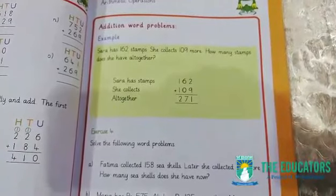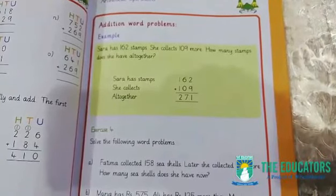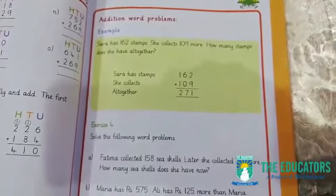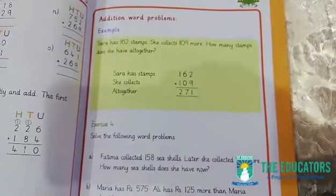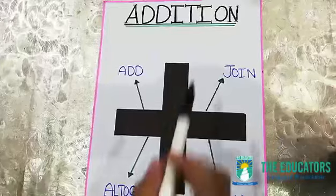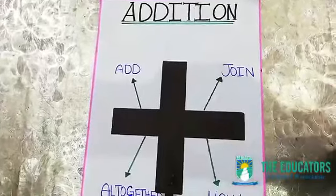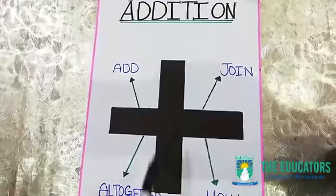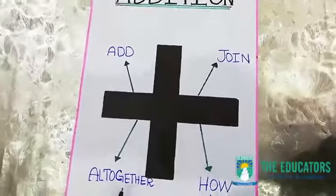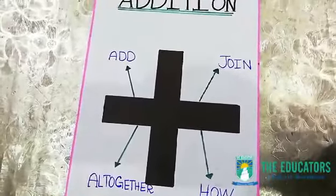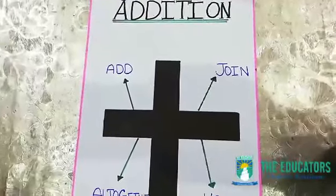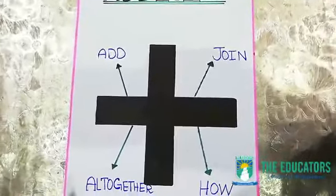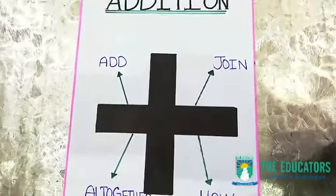In the previous lecture, we learned about how to add different numbers and addition with carrying. Before doing any question, let's have a look at the previous lecture. Addition — this is the sign of addition, and different words used in your question: add, join, altogether, how many. I have told you that in your addition word problems, these words are used.